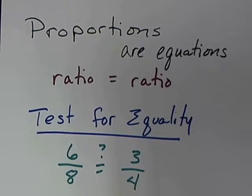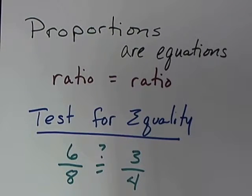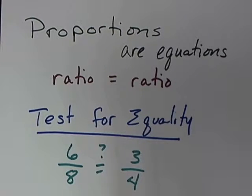We're not just going to have a single ratio out there. One of the things we're going to do is set ratios equal to other ratios. Those are called proportions. Proportions are simply equations — we're going to have some sort of ratio or fraction equal to another ratio or fraction. Before we get into solving a proportion, we need to learn something called the test for equality.